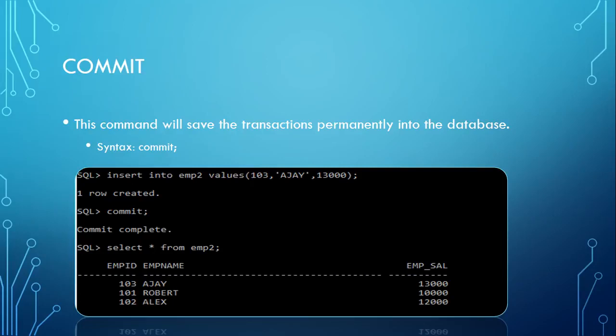Consider an online forum or a railway reservation system where transactions are being recorded — for example, reservations being booked. For every 20 or 50 transactions, we will give a commit point, which means those records will be updated permanently into the database.